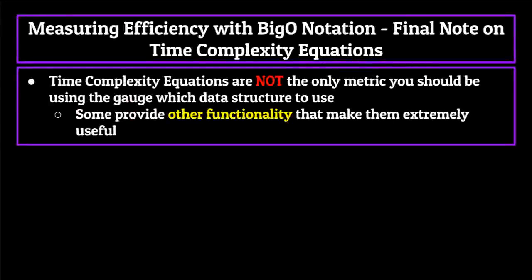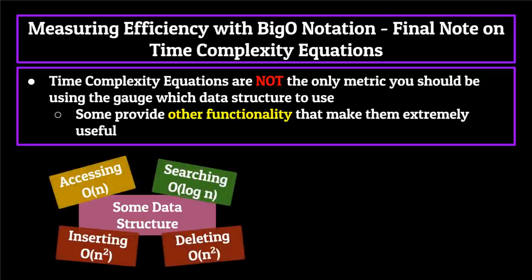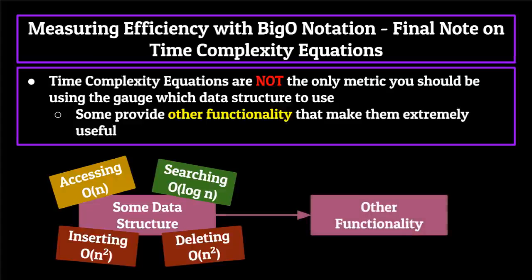The final thing I want to say is just a reiteration of something I said before. These time complexity equations are not the only metric you should be using to gauge which data structure to use. As we get deeper and deeper into this series, you'll see that we might have some data structures which don't seem that efficient at all based on their time complexity equations, but provide some other functionality or feature which makes them extremely useful for programmers. Now that we have some knowledge on how we actually grade these data structures in terms of efficiency, let's hop into our very first data structure.